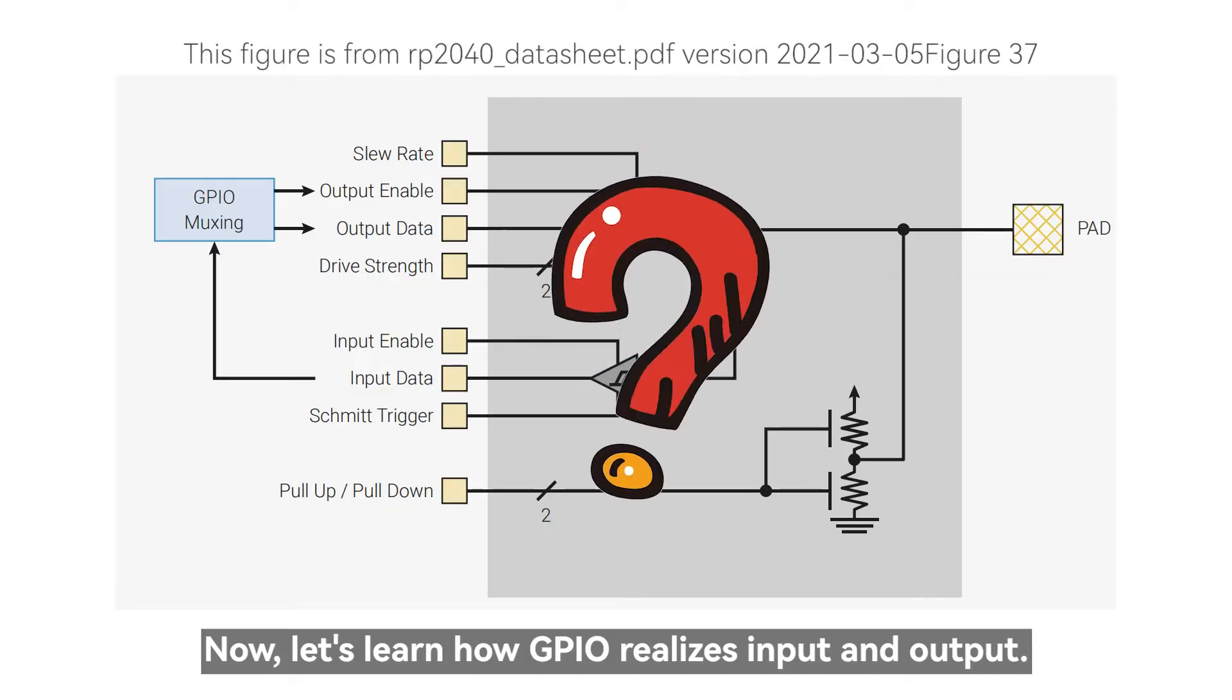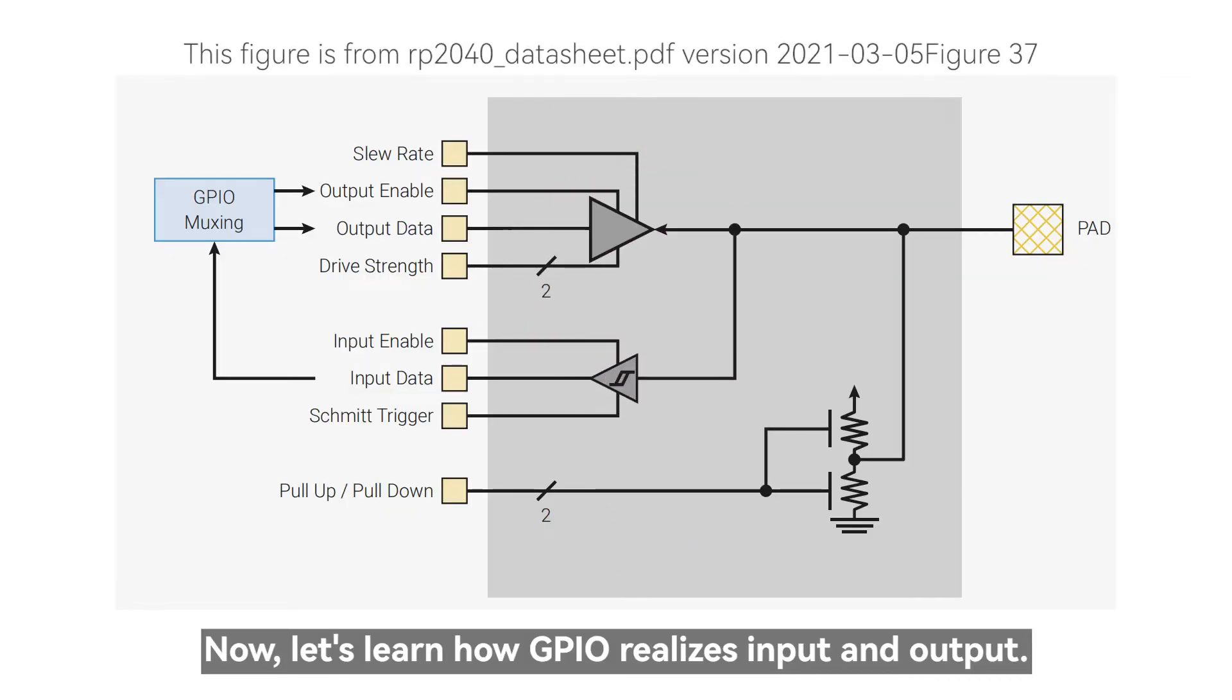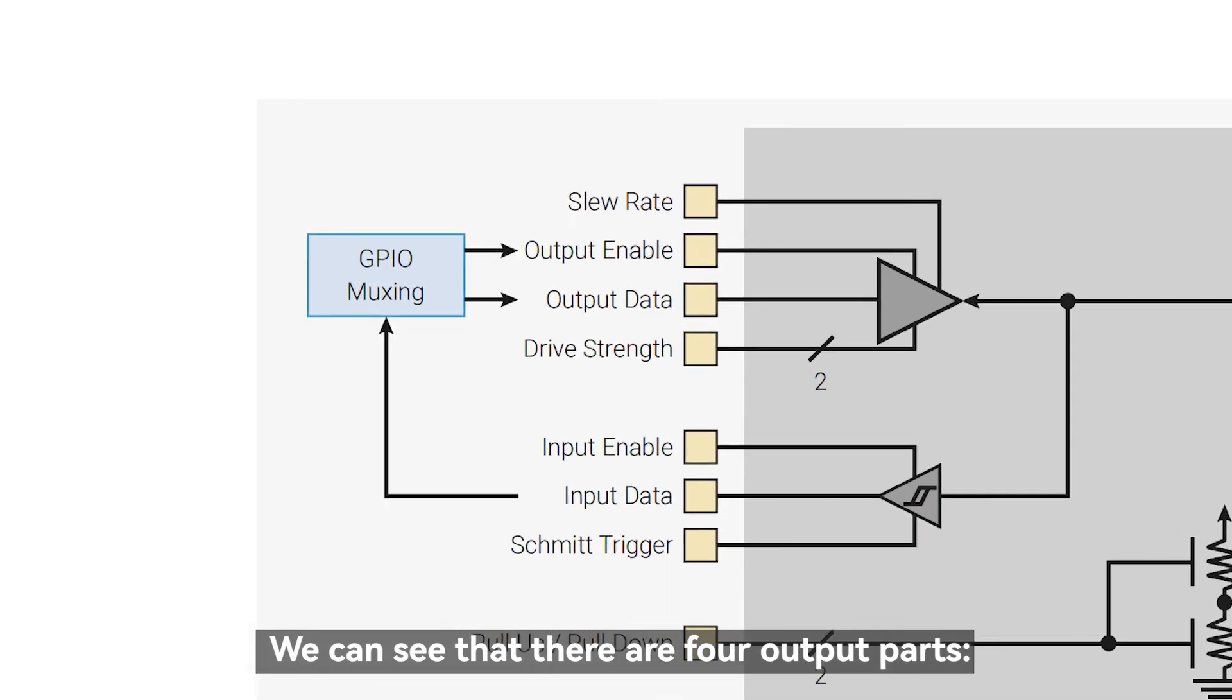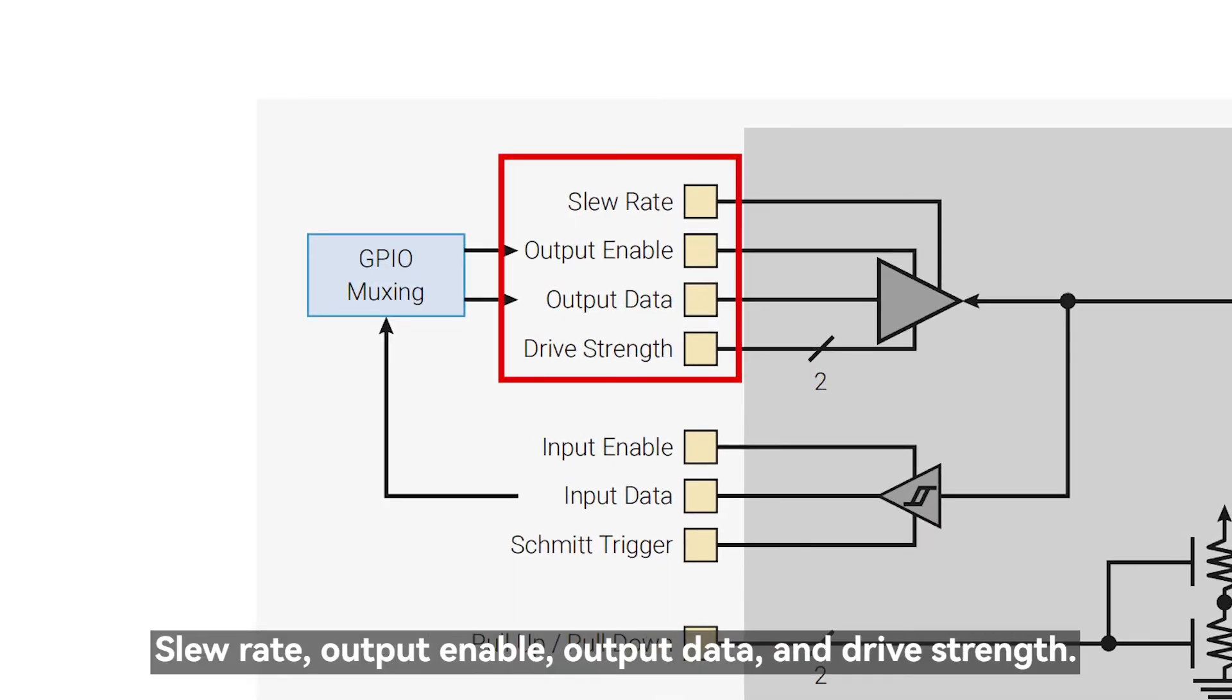GPIO internal structure. Now, let's learn how GPIO realizes input and output. We can see that there are four output parts: slew rate, output enable, output data, and drive strength.